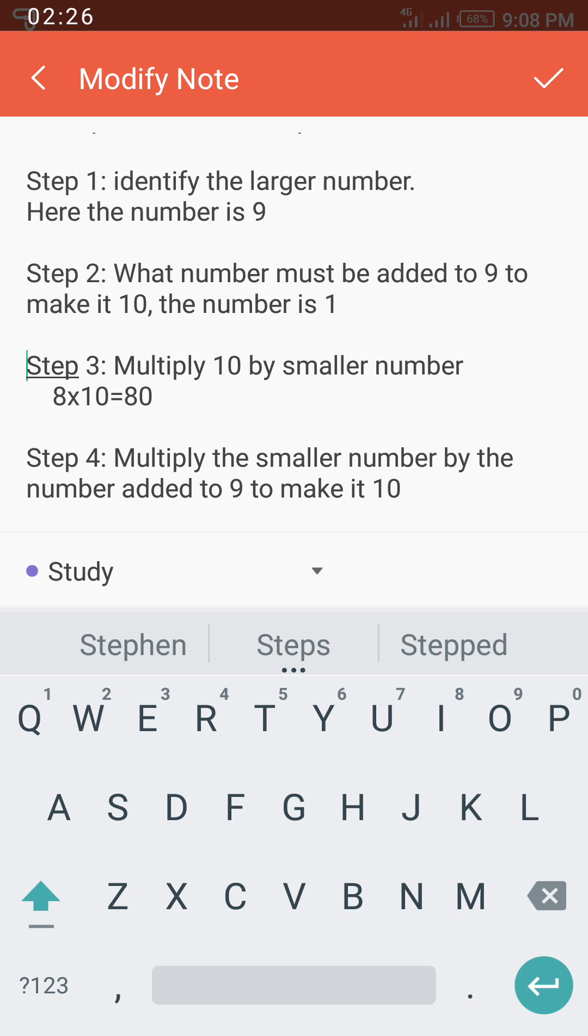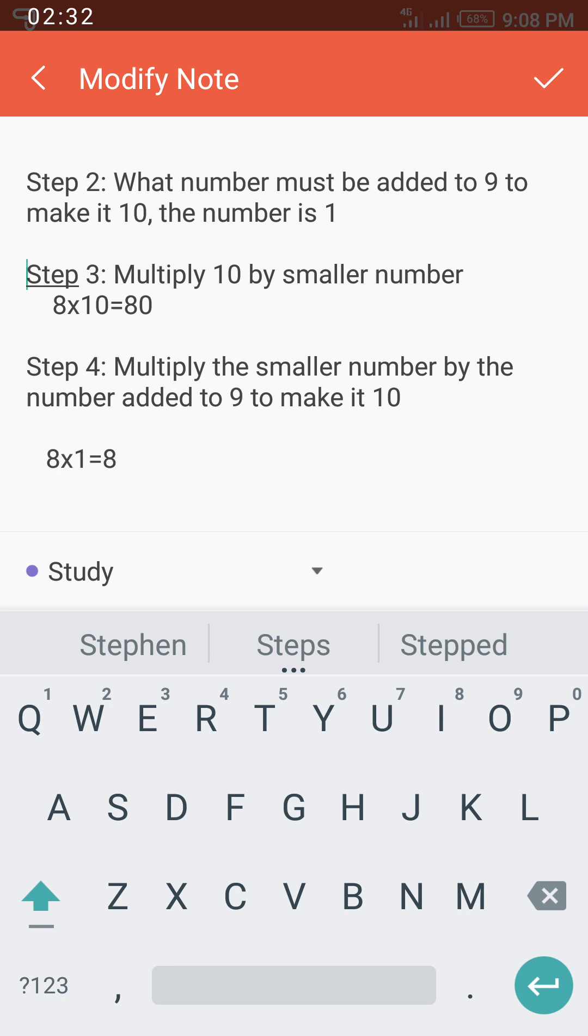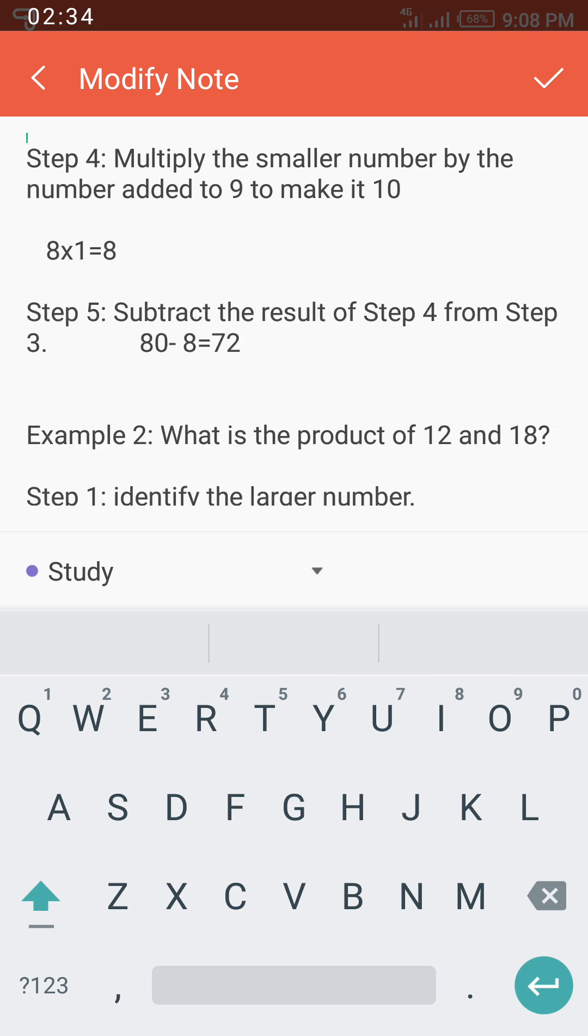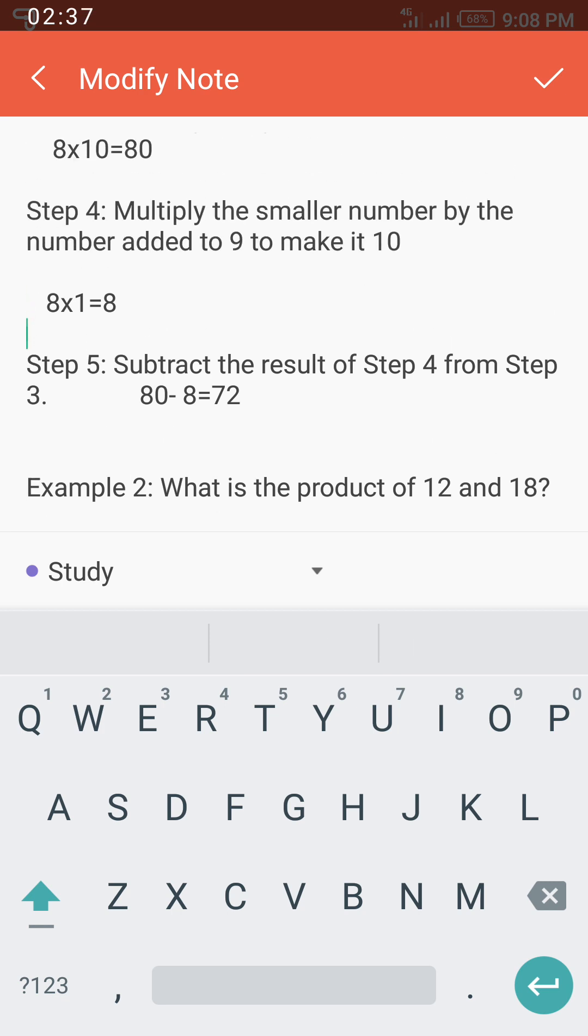Step 4 says multiply the smaller number by the number added to 9 to make it 10. It was 1 that we added to 9, so we multiply the smaller number by 1. 8 multiplied by 1, and that gives us 8.